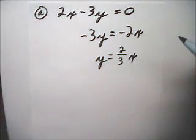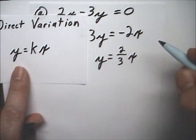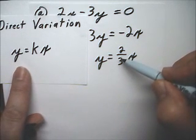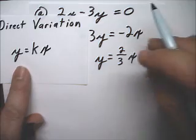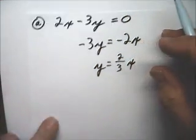Well, that is in this form, y equals kx. And the constant of variation, k, is 2 thirds. And yes, this is direct variation.